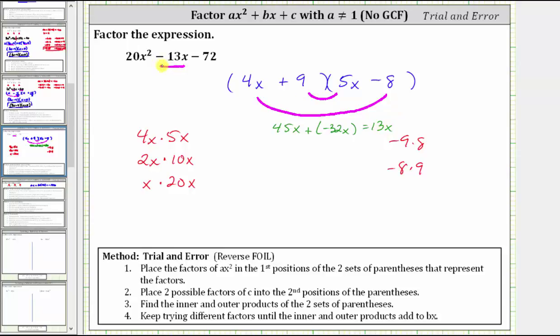And 45x plus negative 32x is equal to 13x, and we want negative 13x. Notice we have the wrong sign, or the terms are opposites. And this is an easy fix. We simply change the sign of the factors, which means we change the plus 9 to minus 9, and we change the minus 8 to plus 8.